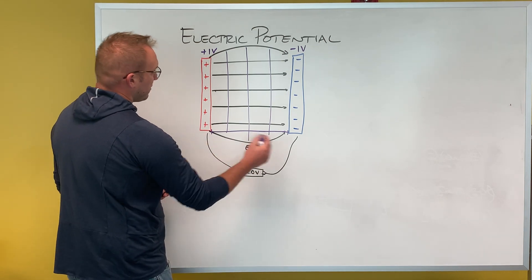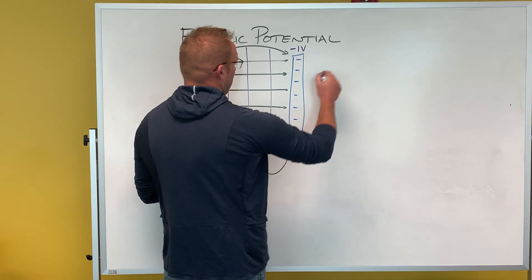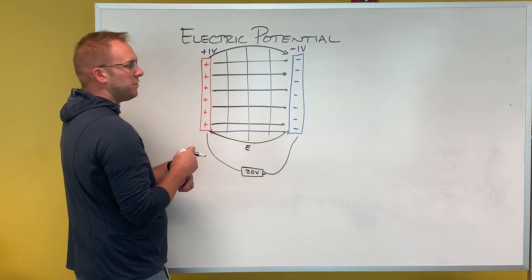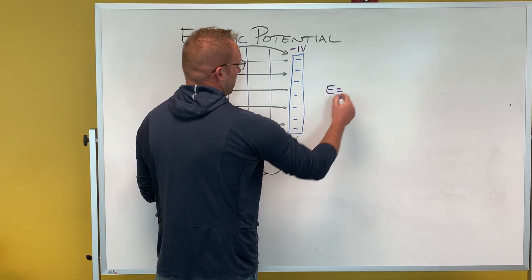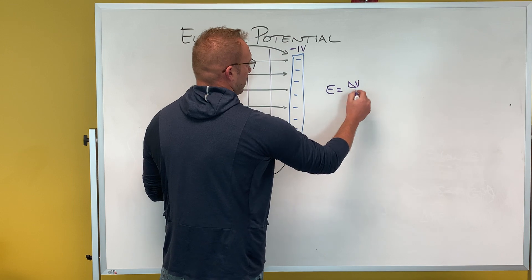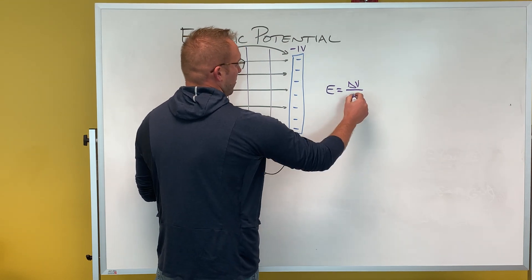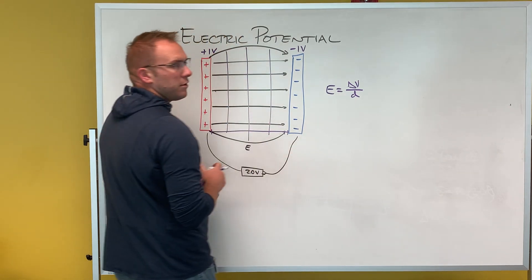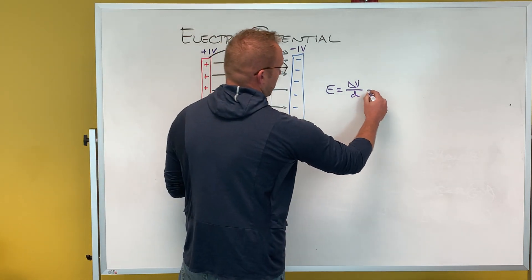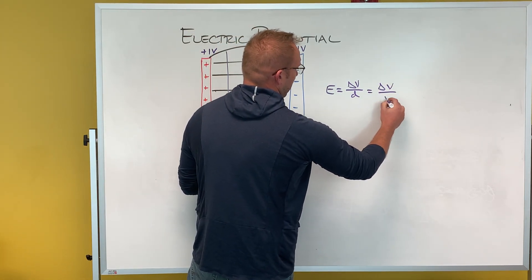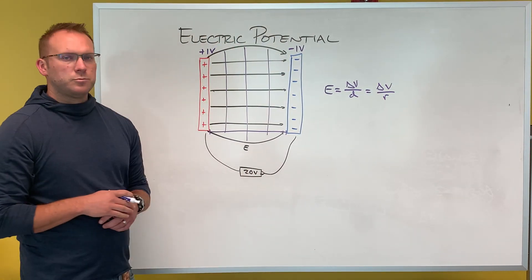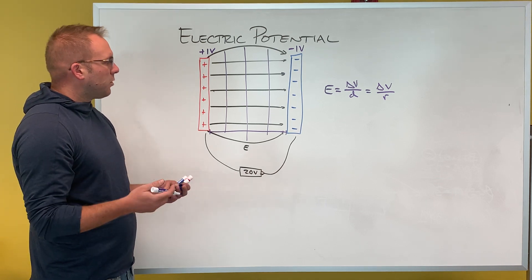based upon how far apart these two plates are spread. So the distance apart and their potential difference can give me the equation for the electric field, which is the potential difference of the voltage divided by the distance they are apart. Now how can we use that here?